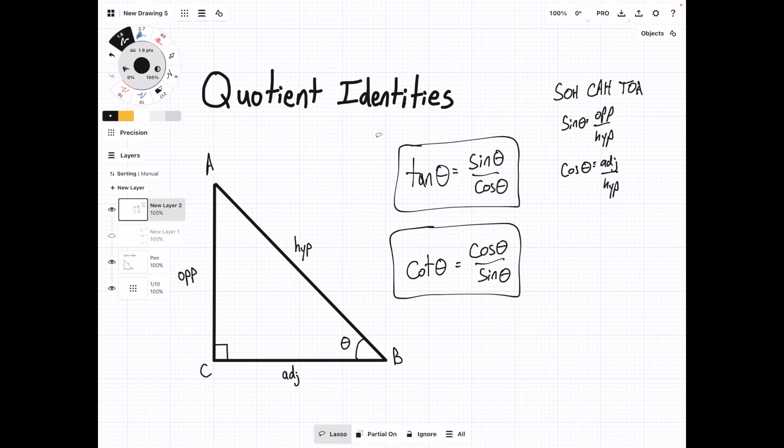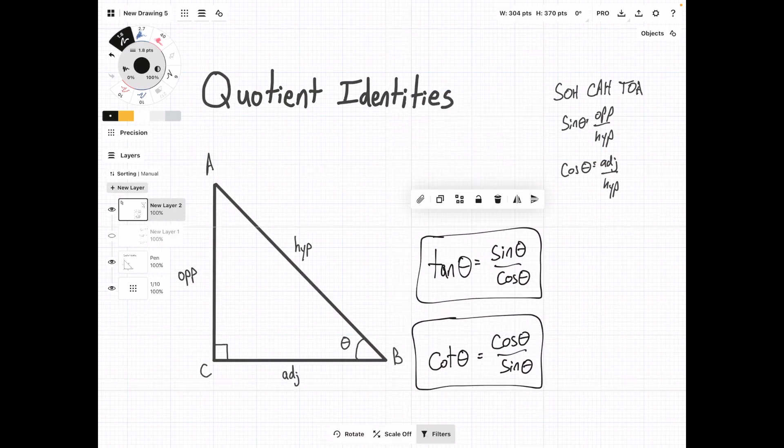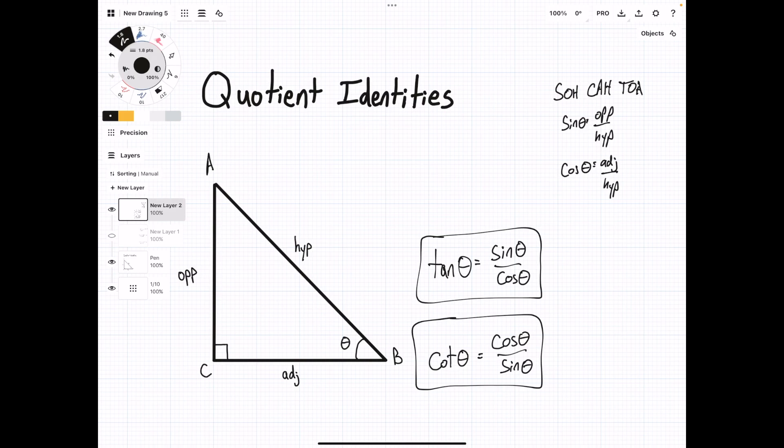So what we can do for tangent is plug in sine and cosine. We'll have opposite over hypotenuse for sine, all over adjacent over hypotenuse. If we do some algebra, this comes out to opposite over adjacent. And if we look back at SOHCAHTOA, TOA is opposite over adjacent, so this checks out.